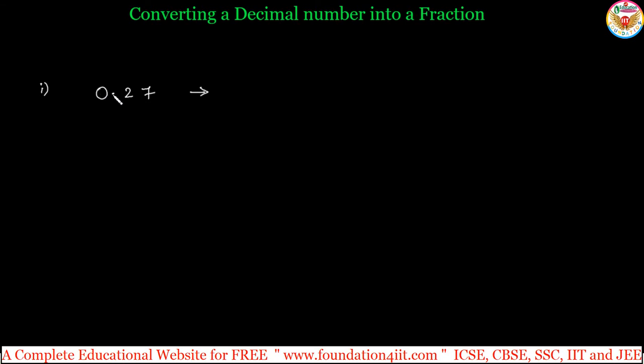From this, remove this decimal point from 0.27. If I remove that point, 027 is nothing but just 27. There is no meaning to keep the zero before the number. So, 27.